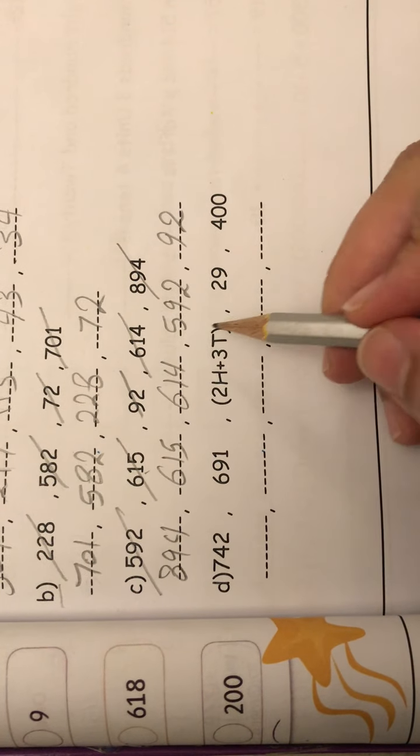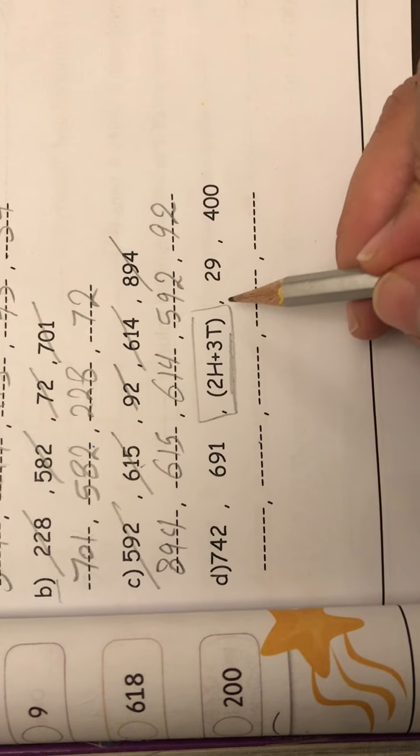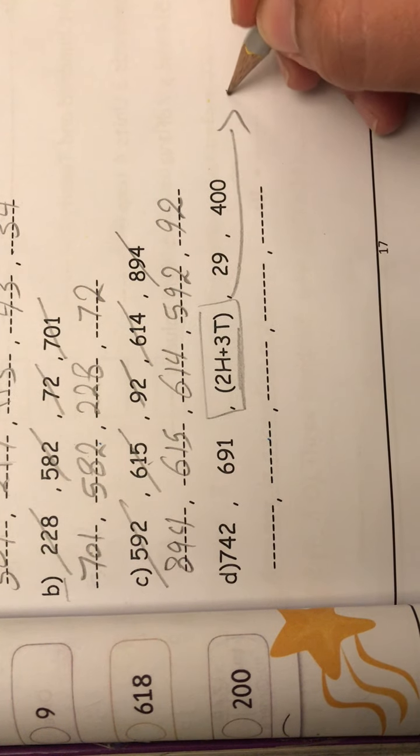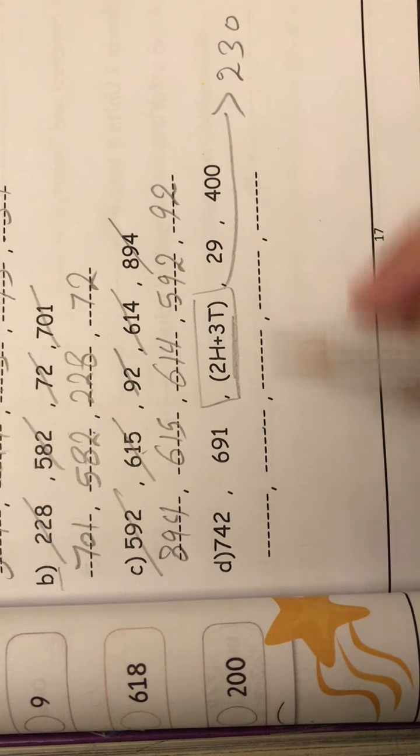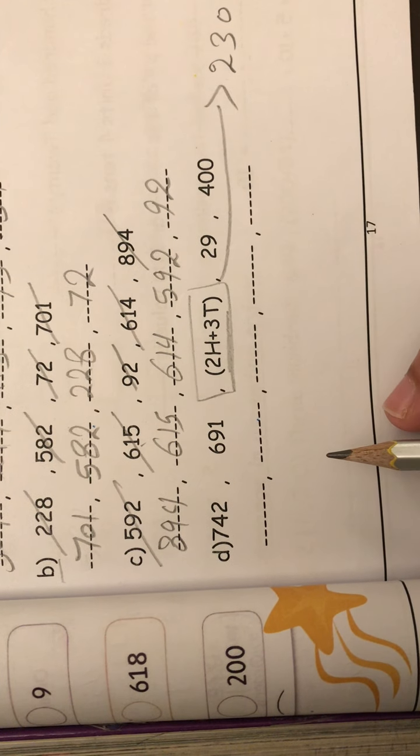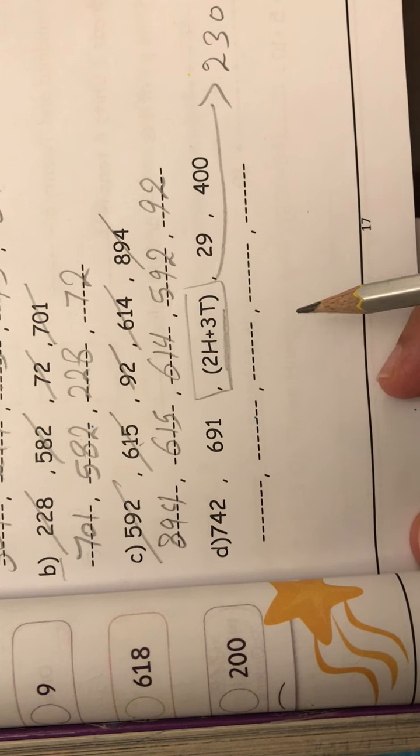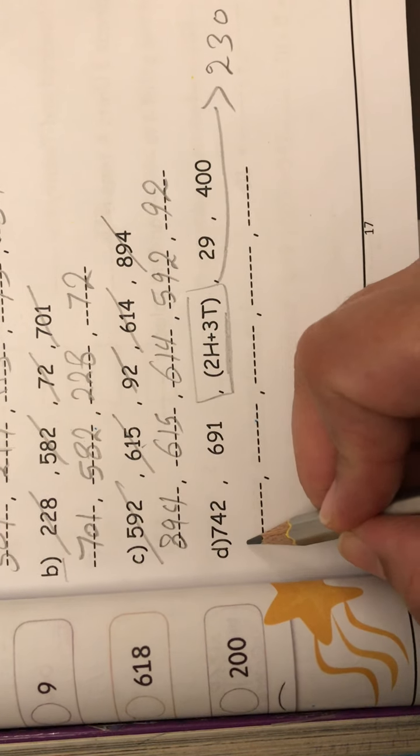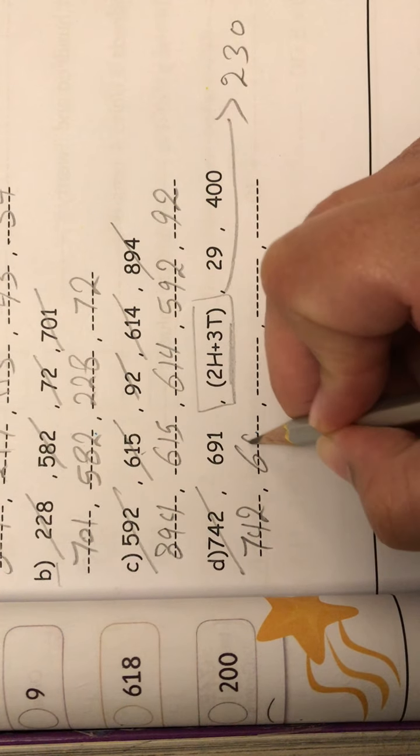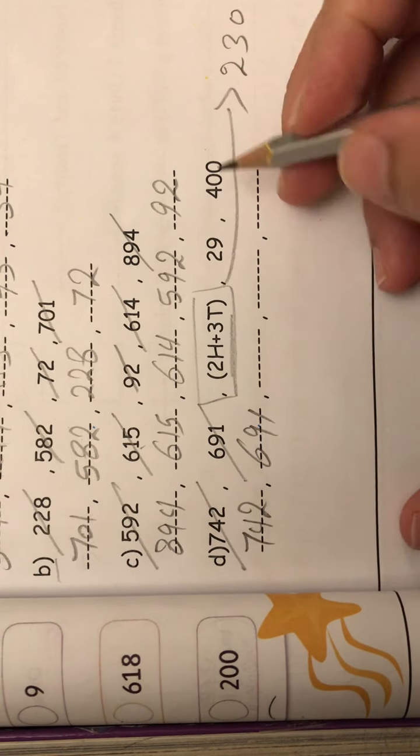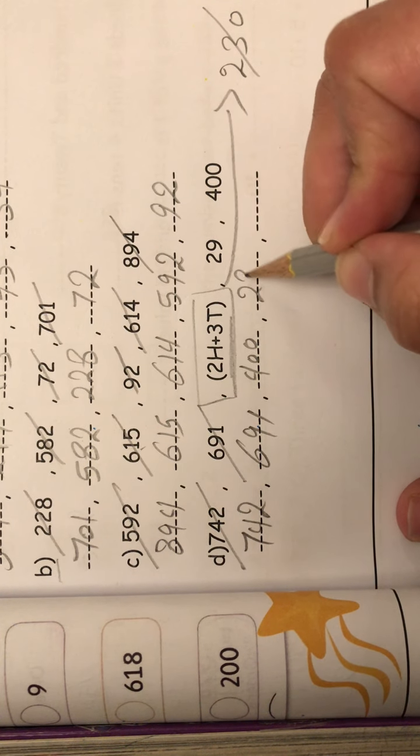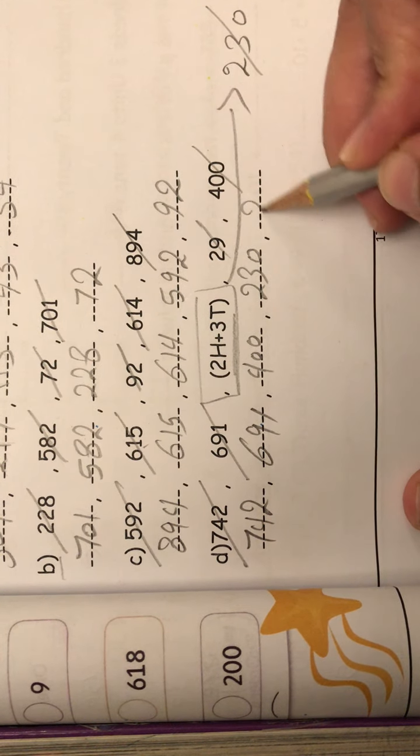The last one here. You must transfer it to standard form. So it will be 2 hundreds, 3 tens. So 230. So now I can put the number in ordering as descending. So start with the big number. So here, 742, 692. What after 692? Excellent. 691. And what? 400. And then 230. And the last, 29.